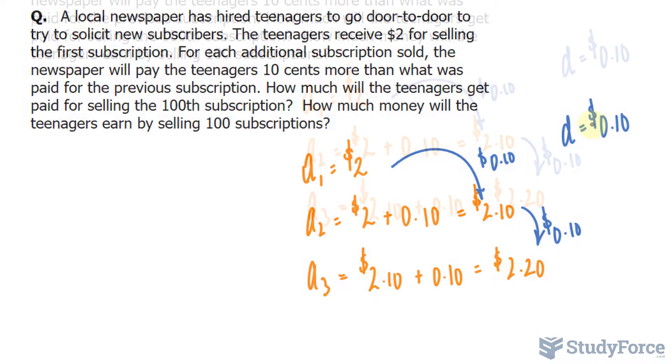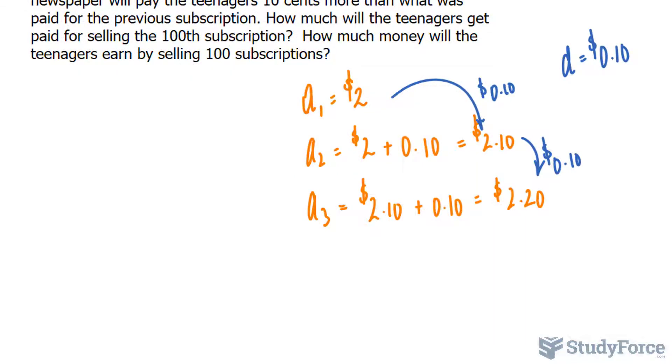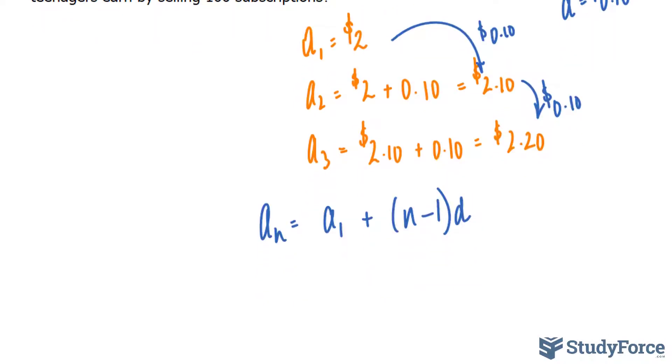Arithmetic sequences can be modeled using this template, this formula. We write down a sub n is equal to the initial amount, which I'll call a sub 1, plus bracket n minus 1 times the difference d, where in this case n represents the number of subscriptions. Filling this out with what we know: